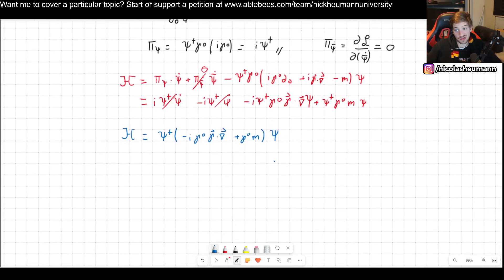And in principle there we go, but there is something else we can do. It is customary to define alpha as gamma 0 gamma, and then beta, this is going to be gamma 0.